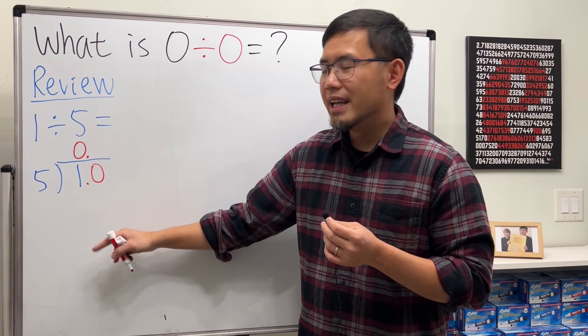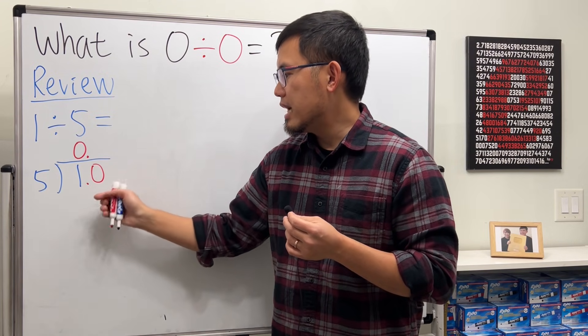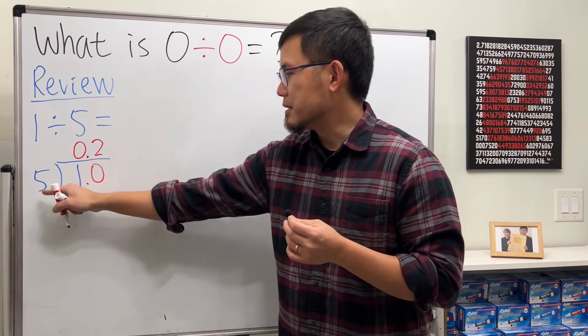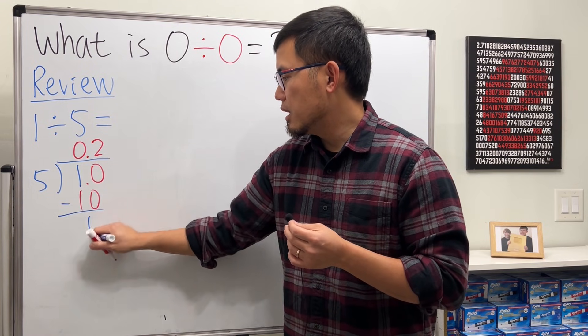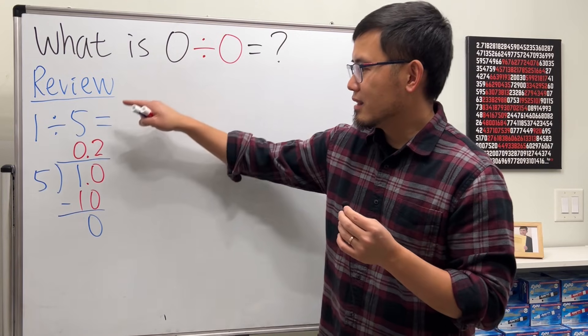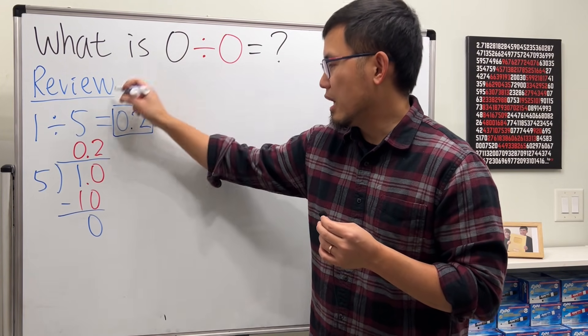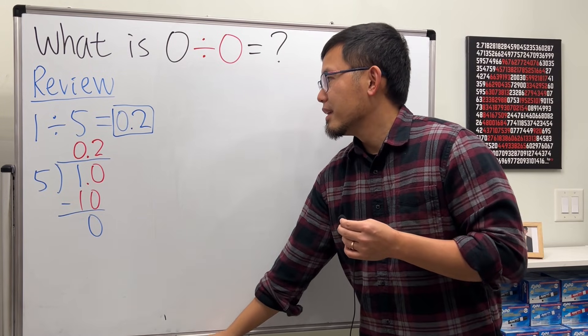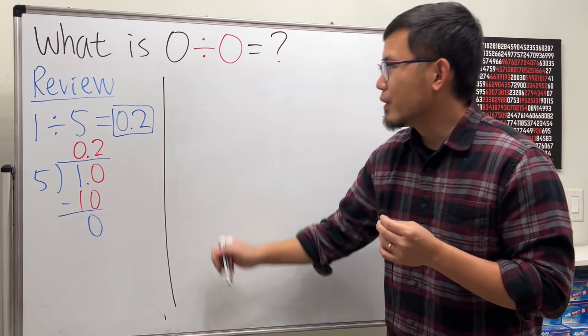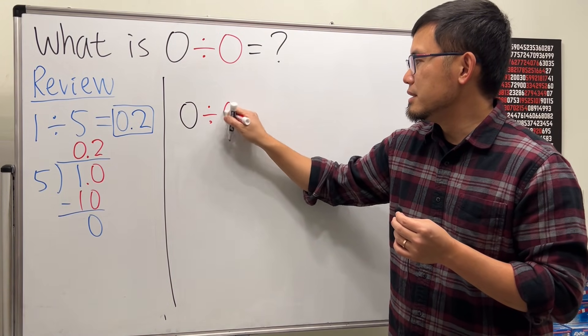And then you can look at five and ten. Five goes into ten two times. Two times five is ten. Subtract, and then you get the remainder zero. You're done. That's the answer: 0.2. Yeah, just like that. So now here we go, what exactly is zero divided by zero?